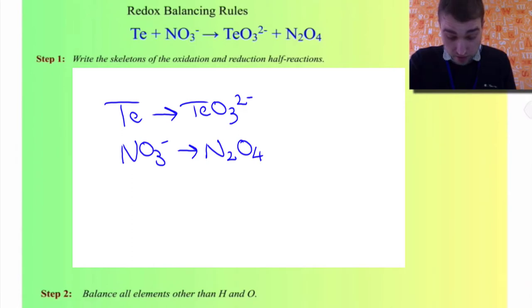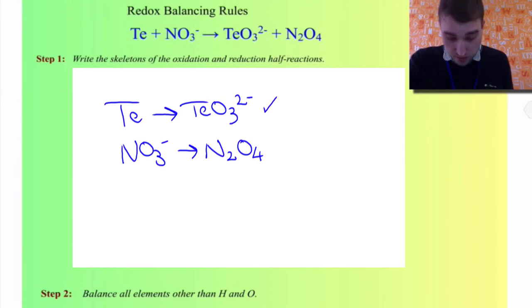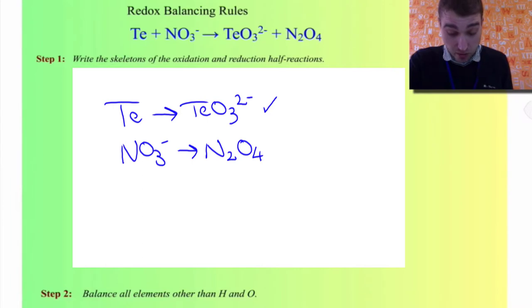Looking at the top equation, we've got one technetium on each side, so that's balanced. For the bottom equation, we've got two nitrogens on the left but only one on the right, so we need to double the number of nitrate ions.